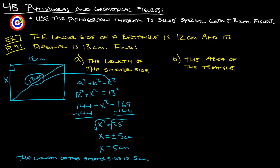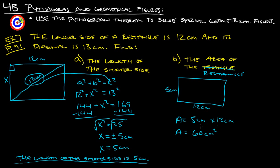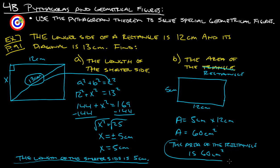I always like to go back and look at what the question asks — find the length of the shorter side — so the length of the shorter side is 5 centimeters. Next thing we need to do is find the area of the rectangle. We know now that this is 5 centimeters and this is 12 centimeters, so the area is 5 centimeters times 12 centimeters, which gives us 60 square centimeters. The area of the rectangle is 60 centimeters squared.